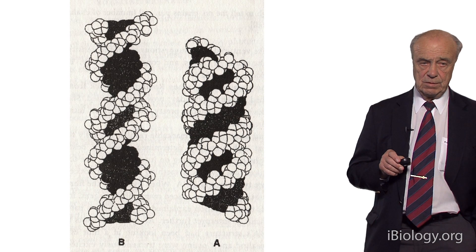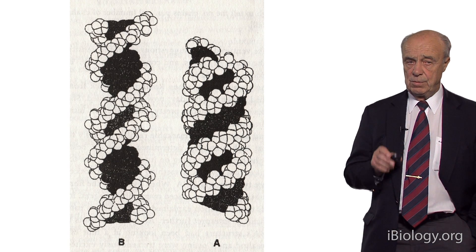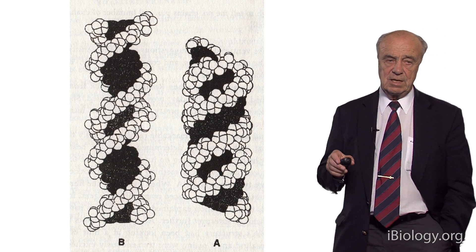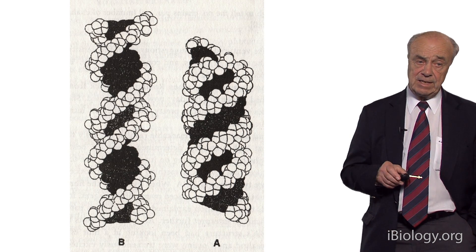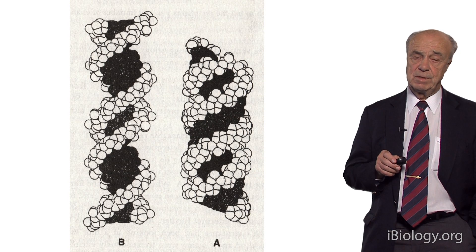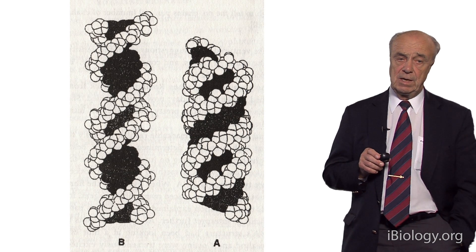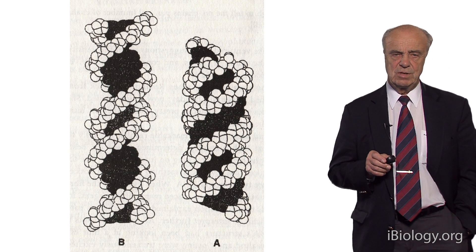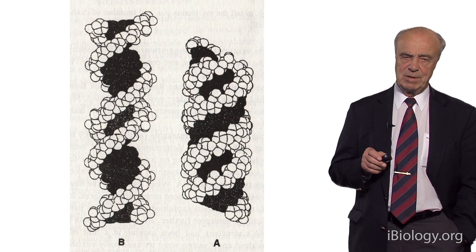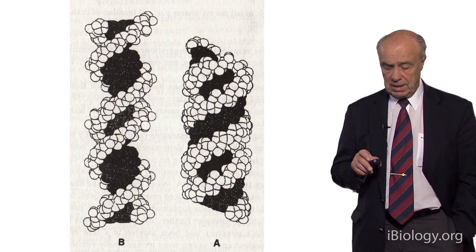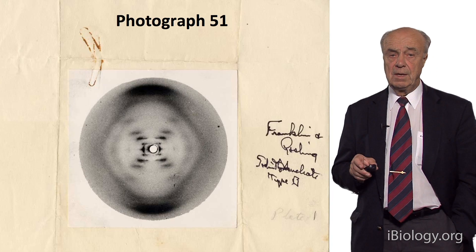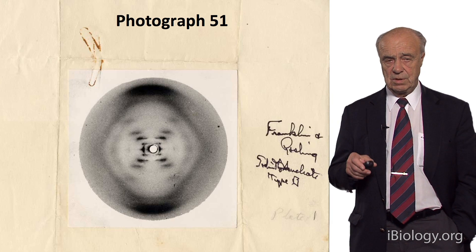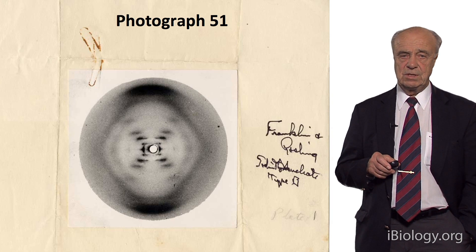Watson and Crick knew about this because Perutz, who was on the review committee looking at data from King's College, leaked information that was in the report from December 1952. Perutz himself later said he was a little immature and that since it wasn't secret material, he shared it. Then in January, Watson was visiting King's College and was shown a very special X-ray photograph.